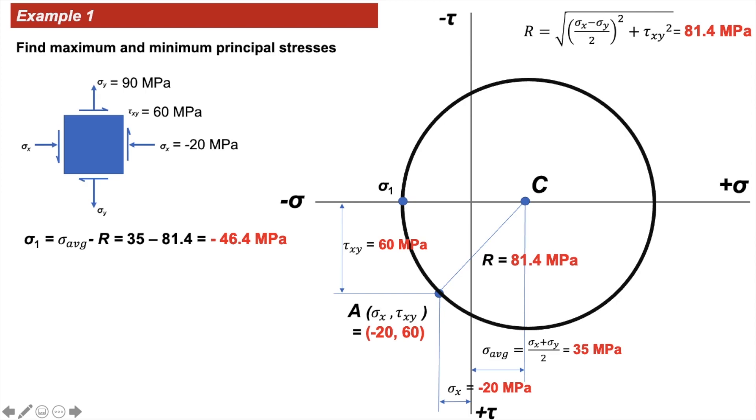The Mohr's Circle has cut the sigma axis at two points: sigma 1 and sigma 2 on either side where the circle cuts the sigma axis. These are the maximum and minimum principal stresses.